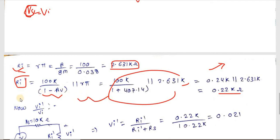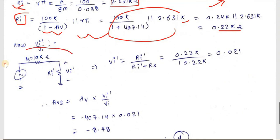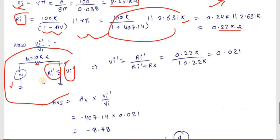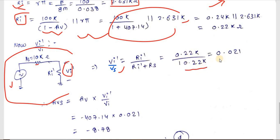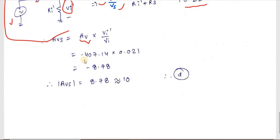Using the voltage divider rule: Vi'/Vi = Ri'/(Ri' + Rs) = 0.22k / (0.22k + 10k) = 0.22/10.22 ≈ 0.021.